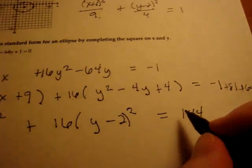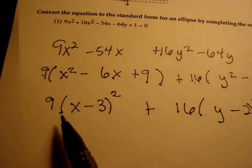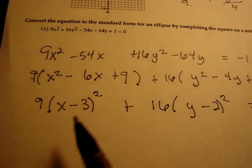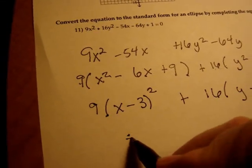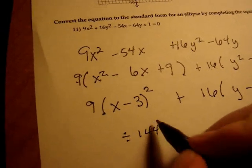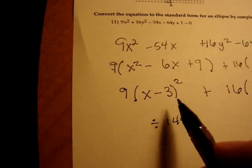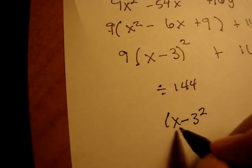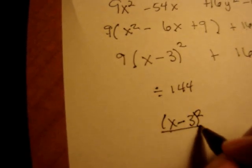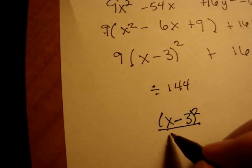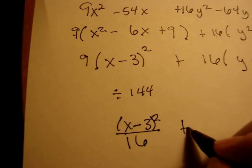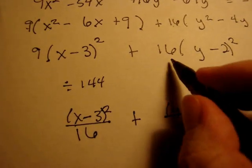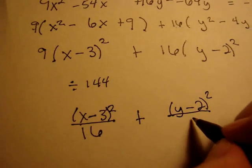So I'll let you stare at that 144. And now we're almost there, not quite in standard form. The last step will be to divide everything by 144. So I'm going to write the simplified version. If I divide this by 144 and reduce, I will get x minus 3 quantity squared over that will become 16, plus y minus 2 quantity squared over 16 over 144 will reduce to 1 over 9 equals 1.